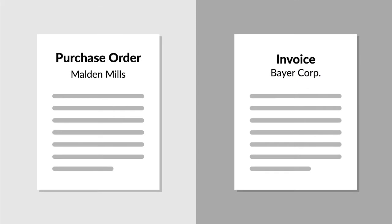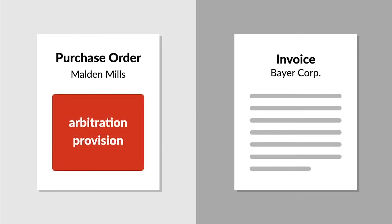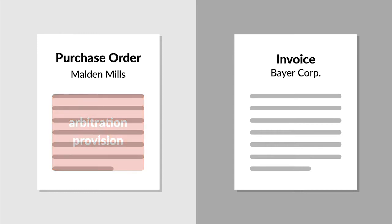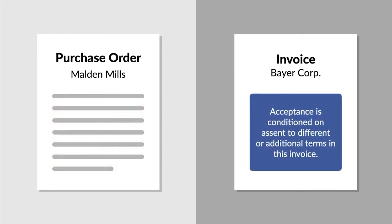Malden Mills purchased nylon tow from Bayer Corporation. Malden Mills' purchase order contained an arbitration provision. Bayer's invoice, however, didn't contain an arbitration provision. Bayer's invoice expressly conditioned its acceptance on Malden Mills' assent to any different or additional terms contained in Bayer's invoice.